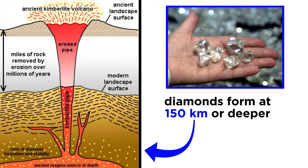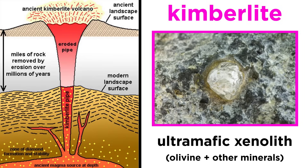Diamonds, for example, are formed at depths of about 150 kilometers or deeper, and are primarily found in another ultramafic xenolith called kimberlite.